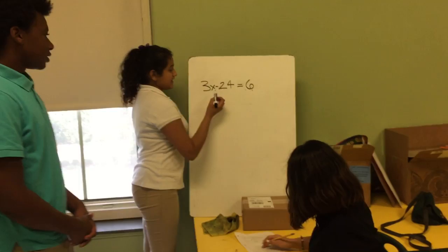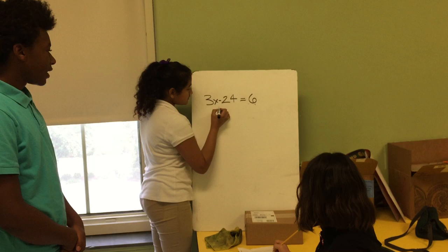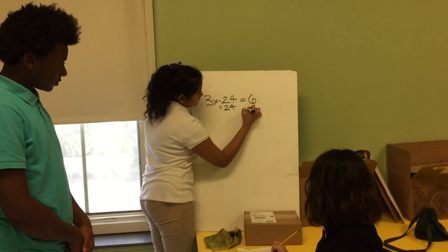Well, first, we all know that the opposite of subtraction is addition. Yes, and then we're going to add plus 24 on both sides.